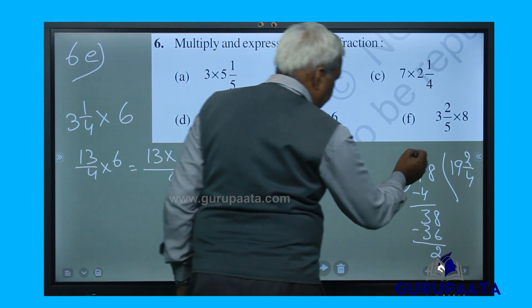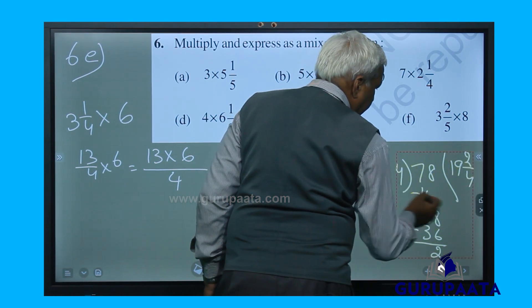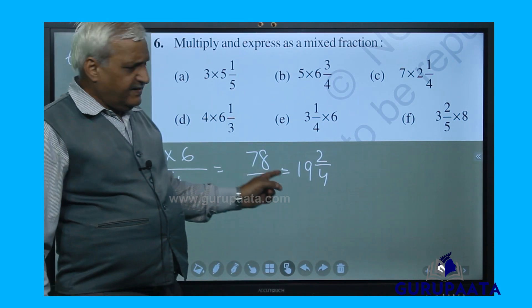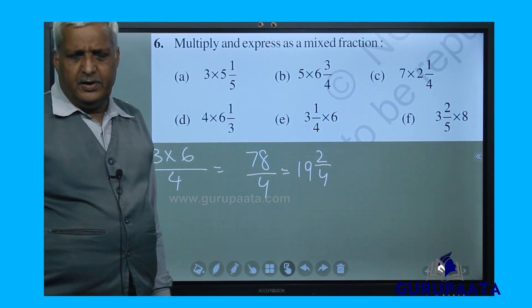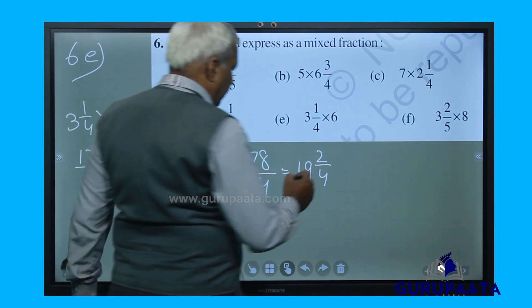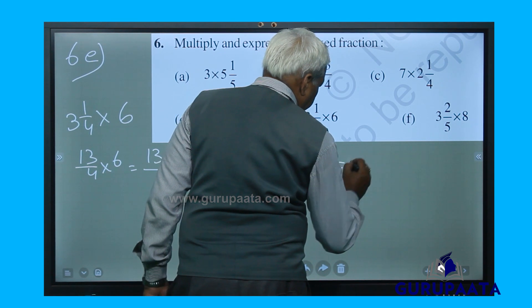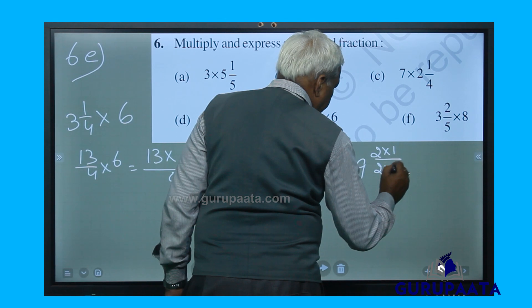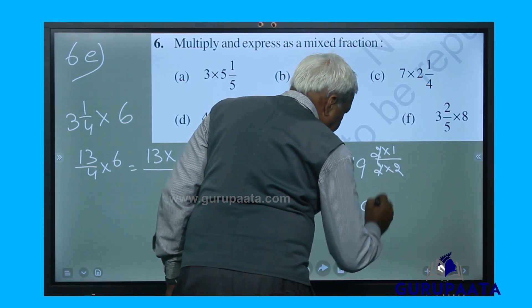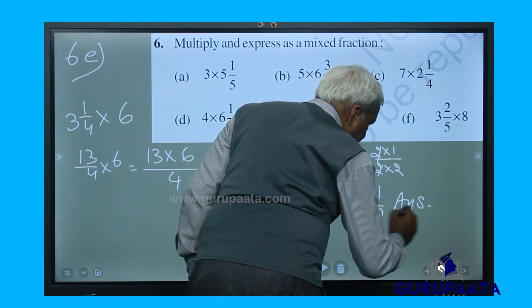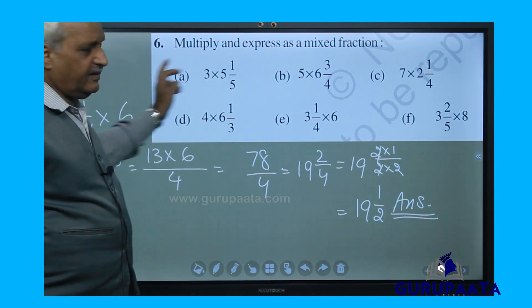Now 2 and 4 have a common factor of 2, so we simplify: 2 and 2 into 1 by 2 into 2. The 2s cancel, giving 19 and 1 by 2. I am removing the working to avoid confusion. This is the answer for question number 6e.